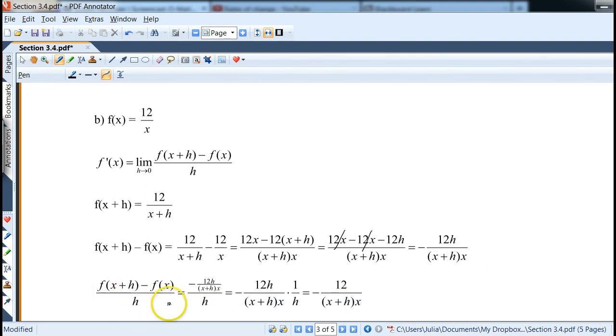Next, I actually divided by h first. So I complete the whole difference quotient. Note how I write the top divided by h, which is the same thing as the function, times 1 over h. So dividing by h is the same thing as multiplying by 1 over h. Now notice how the h on the top and h on the bottom are gone. So we end up with negative 12 over x plus h times x.